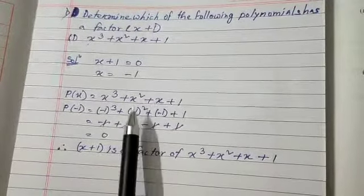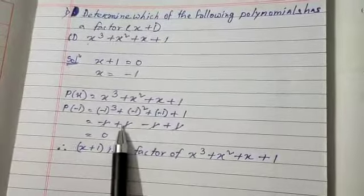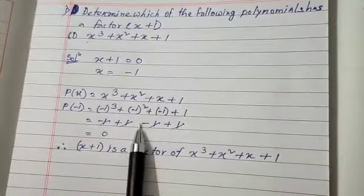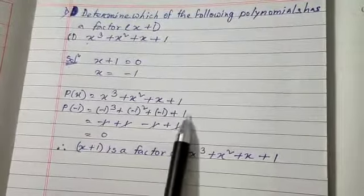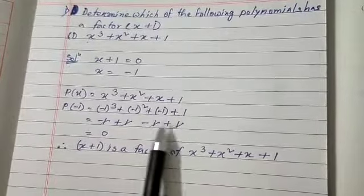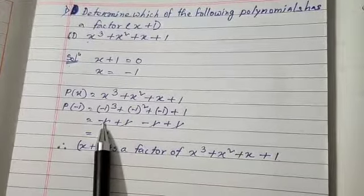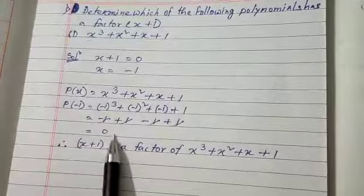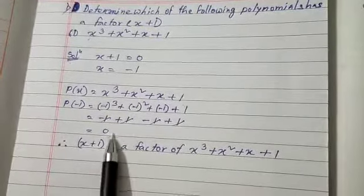Continuing: plus (-1), plus 1. So we have: -1 + 1 - 1 + 1. The positive and negative ones cancel out, leaving 0.